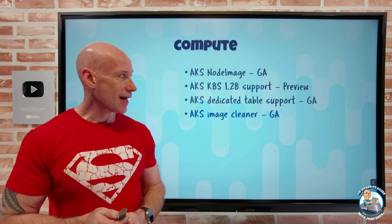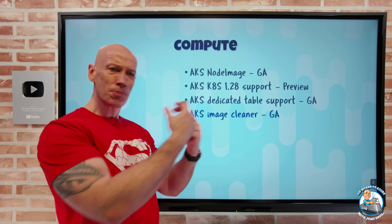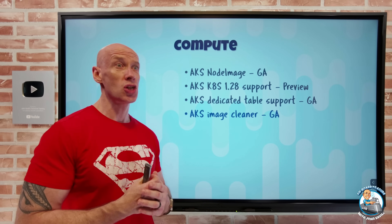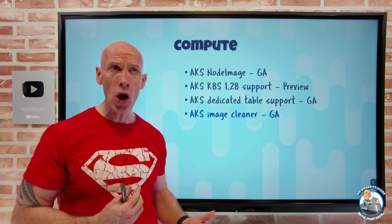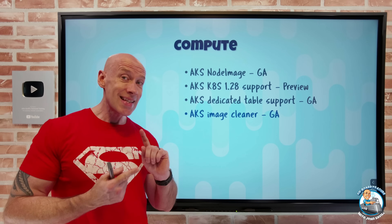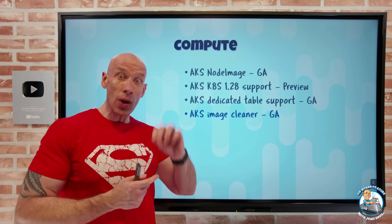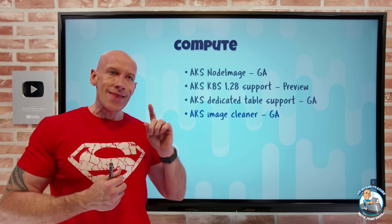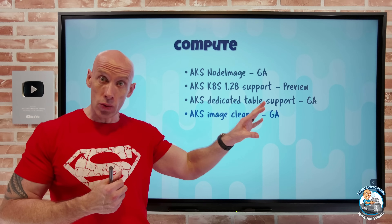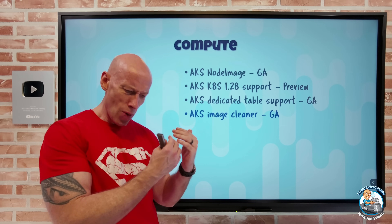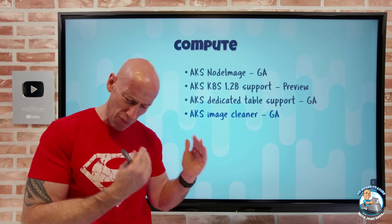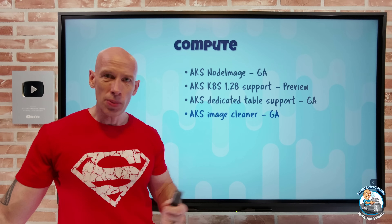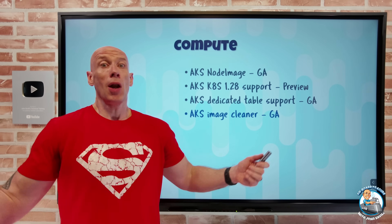AKS also now has the image cleaner in GA. Over time, nodes pull down images used for containers, but newer ones come out and older images stay on nodes, which may have vulnerabilities — it's just bloat. The image cleaner does two things: a scanner based on the Trivy Security Scanner classifies image vulnerabilities from low to critical. Then there's an eraser, built on the eraser solution, that on a schedule you define (as often as every day, up to every three months, default weekly) cleans up unused images and those with vulnerabilities, protecting you from that risk and general bloat.